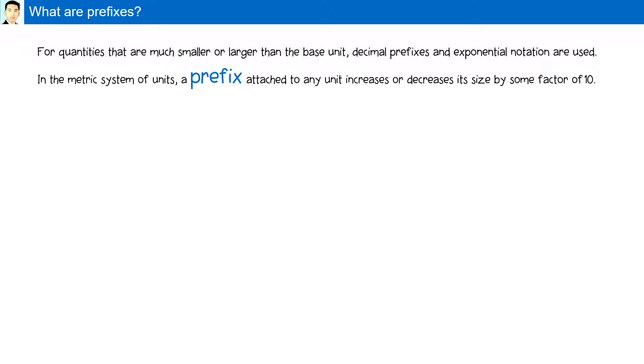What are prefixes? For quantities that are much smaller or larger than the base unit, decimal prefixes and exponential notation are used. In a metric system of units, a prefix attached to any unit increases or decreases its size by some factor of 10. For example, here we have the base unit which is multiplied by 1 and the exponent form is 10 to the 0 power.